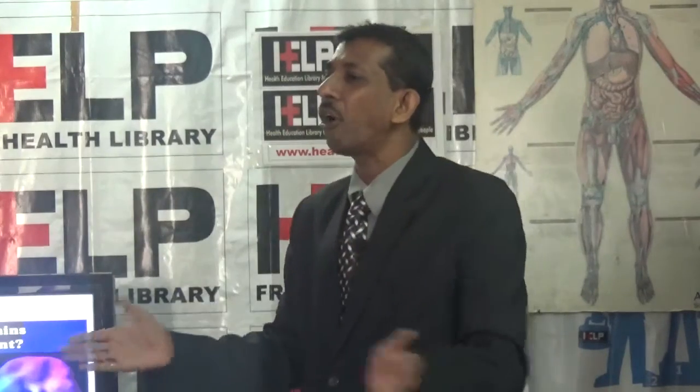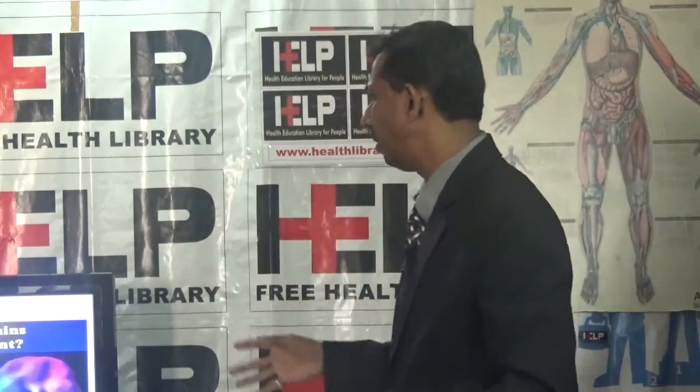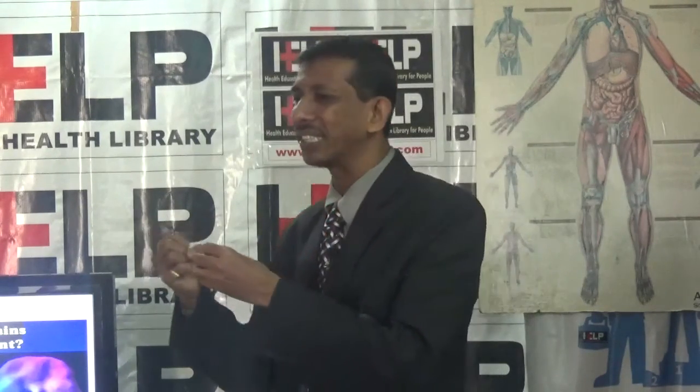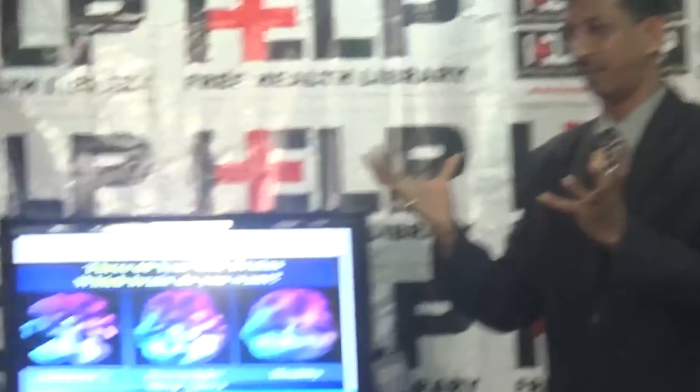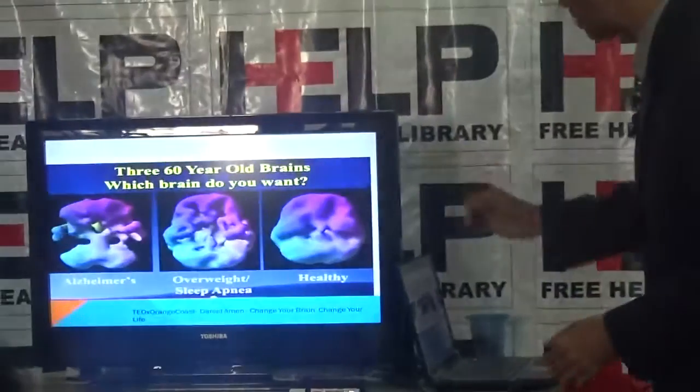Overweight and sleep apnea — due to unhealthy or unhygienic food and unplanned routines — cause the brain to shrink. It doesn't expand, it doesn't thrive. A healthy brain helps you maintain your style of living — it tells you what to speak, what not to speak, how to be. The company you keep builds your habits, and that builds your destiny.